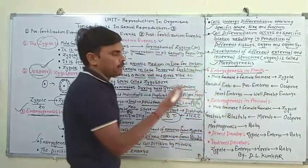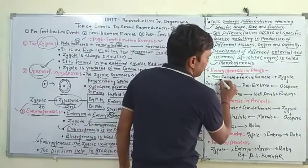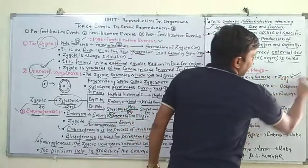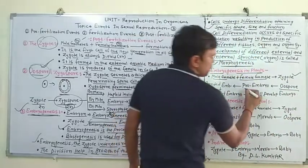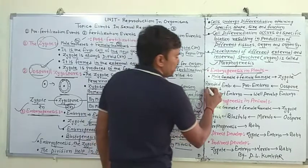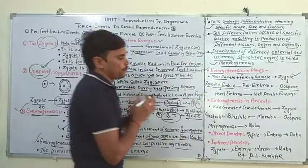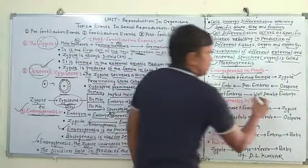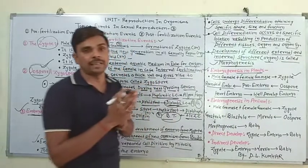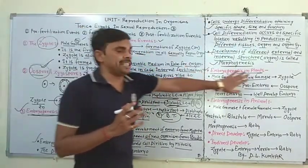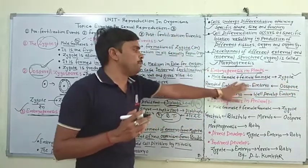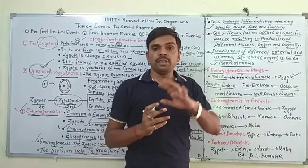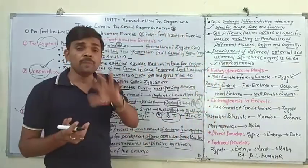Embryogenesis in plants: Male gamete और female gamete के fusion से Zygote बनता है, Zygote से Oospore बनता है, Oospore से Pro-embryo बनता है, Pro-embryo से rounded embryo develop होता है, फिर heart-shaped embryo develop होता है, और last में well-developed embryo develop हो जाता है।